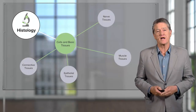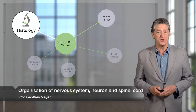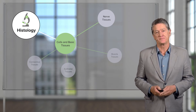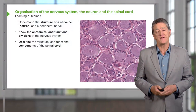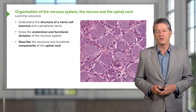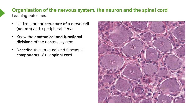In this lecture, you are going to learn about the organisation of the nervous system, the structure of the nerve cell or neuron, and also the structure of the spinal cord. At the end of this lecture, you should have a very good understanding of the structure of the nerve cell or nerve fibre. You should know the anatomical and functional divisions of the nervous system. And finally, you should be able to describe the histological structure of the spinal cord and also be able to identify its functional components.